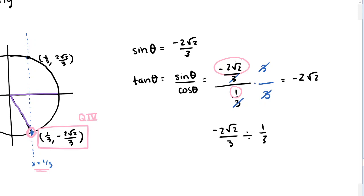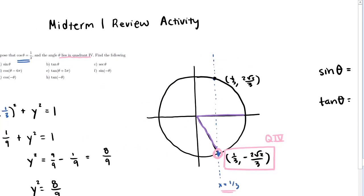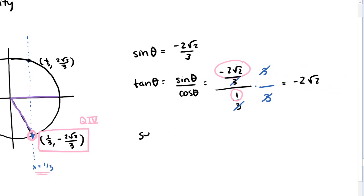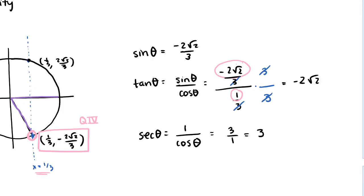Next we're asked to evaluate secant of theta. Secant of theta equals 1 over cosine of theta — it's the reciprocal of the cosine function. If cosine is 1/3, the reciprocal of 1/3 is 3. So secant of theta = 3.